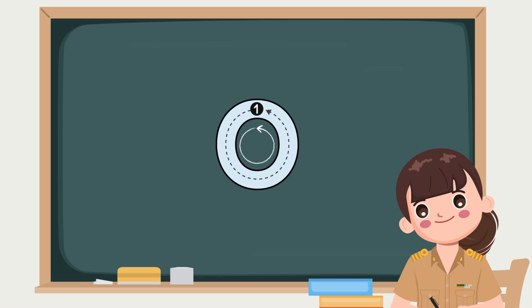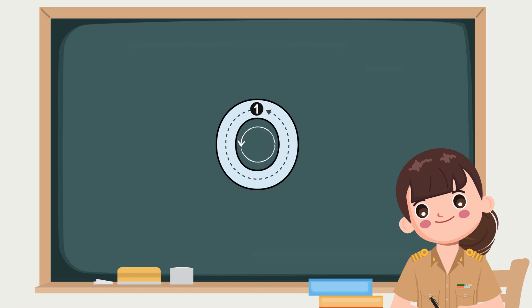Now, let's try the small letter O. Just like the big letter O, make a circle to the left. Make a circle to the left. Fantastic!